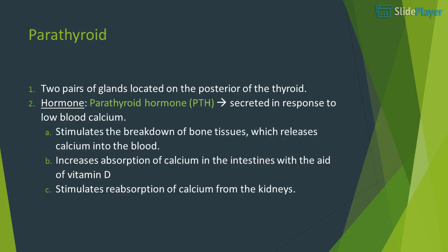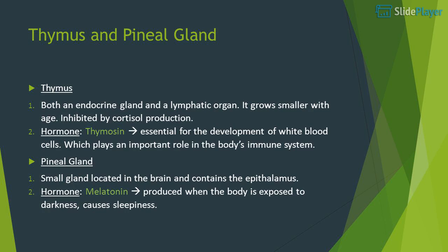Parathyroid: two pairs of glands located on the posterior of the thyroid. Hormone: parathyroid hormone (PTH) is secreted in response to low blood calcium. It stimulates the breakdown of bone tissue, which releases calcium into the blood, increases absorption of calcium in the intestines with the aid of vitamin D, and stimulates reabsorption of calcium from the kidneys.